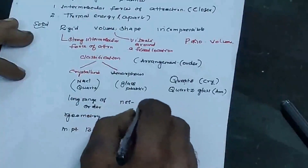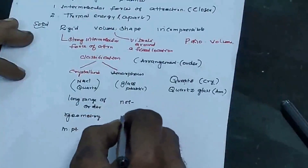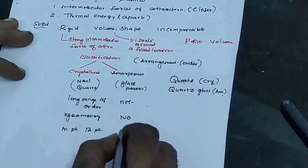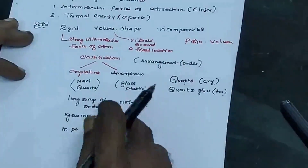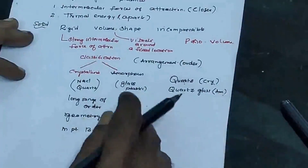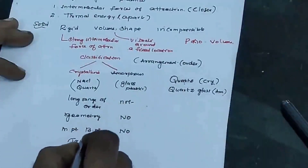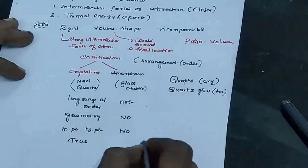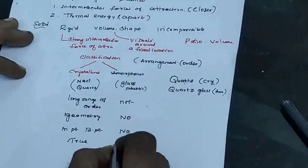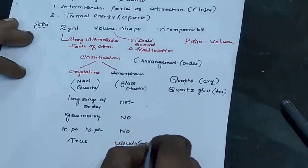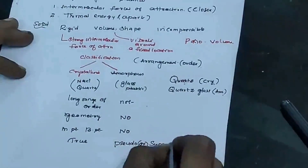In amorphous solids, the change happens suddenly, so they have no definite melting point and boiling point. Crystalline solids are true solids, while amorphous solids are pseudo solids, or super cooled liquids. At high temperature, without any sharp transition, amorphous solids pass into a mobile liquid, hence they are called super cooled liquids.